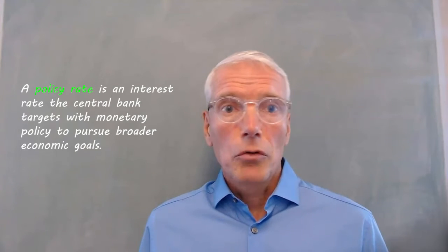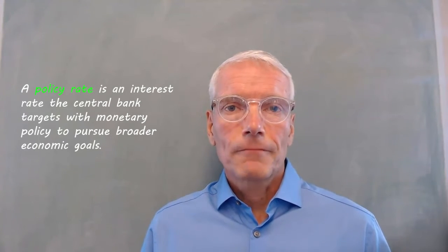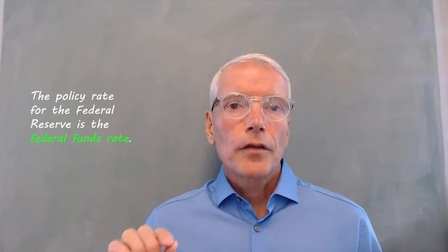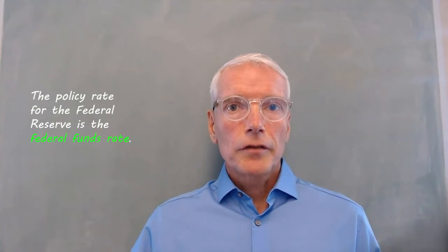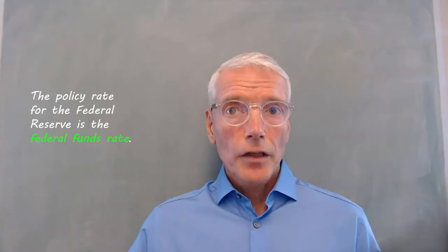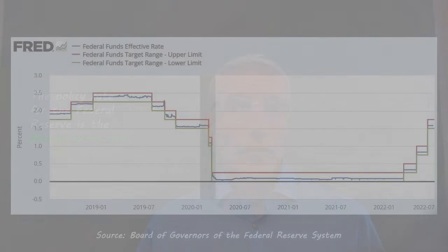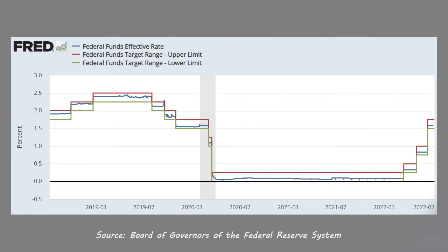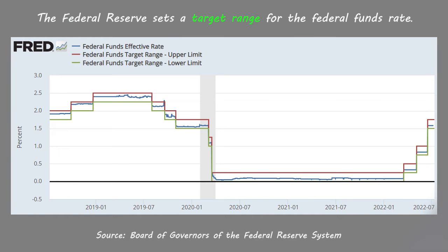such as low levels of inflation. The policy rate for the Federal Reserve is the federal funds rate. The Federal Reserve doesn't set the federal funds rate — the market does. But the Federal Reserve sets a target range for the federal funds rate and uses its policies to bring the federal funds rate within the target range.